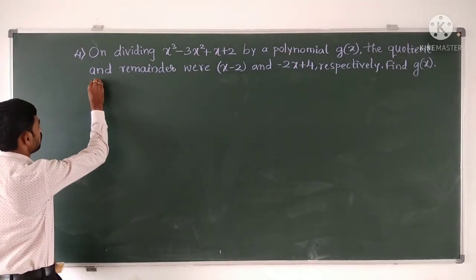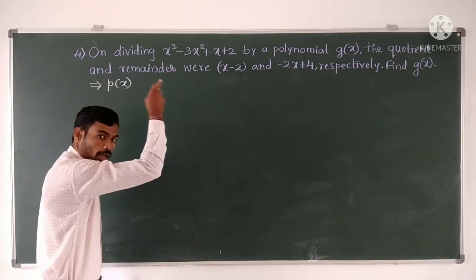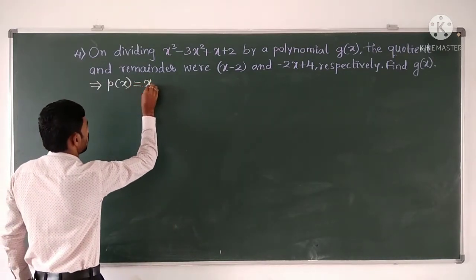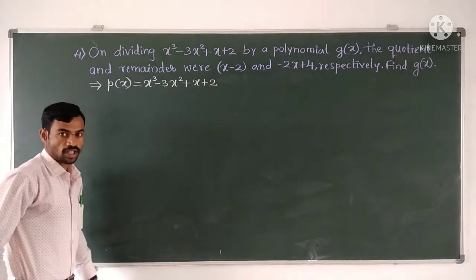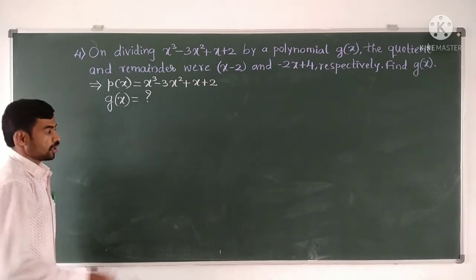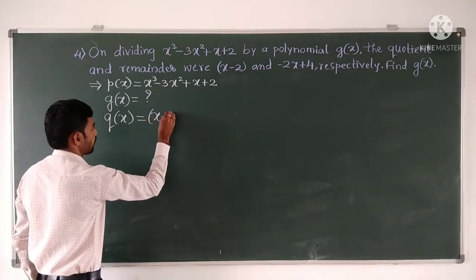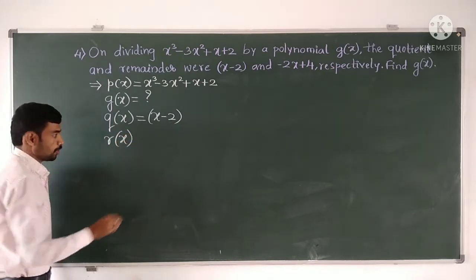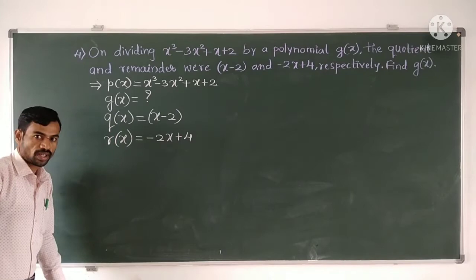In this question, let us write what all is given. P of X is given. P of X is X³ minus 3X² plus X plus 2. We need to find G of X. The quotient polynomial Q of X is X minus 2, and the remainder polynomial R of X is minus 2X plus 4.